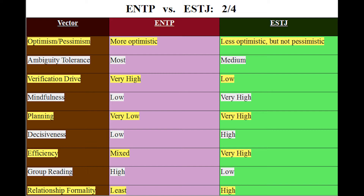Moving faster now. Optimism: ENTPs are more optimistic, ESTJs less so but still quite optimistic, just not as much as us. ENTPs are the most ambiguity-tolerant of all types; ESTJs are medium — not very ambiguity-tolerant but not reactionary because they're T types. Verification: internally, ENTPs have a very high need to verify things in our heads; ESTJs are very low internally. But in the external world, theirs is high and ours is low.